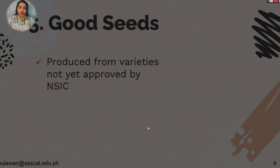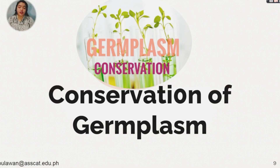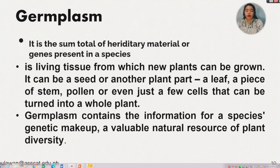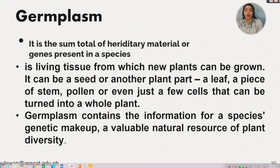Now let's go to the germplasm, or the conservation of the germplasm. Germplasm is the sum total of hereditary material or genes present in a species. It is living tissues from which new plants can be grown. It can be a seed or another plant part — a leaf, a piece of stem, a pollen, or even just a few cells that can be turned into a whole plant, such as through plant tissue culture. Germplasm contains the information for a species' genetic makeup and is a valuable natural resource of plant diversity.